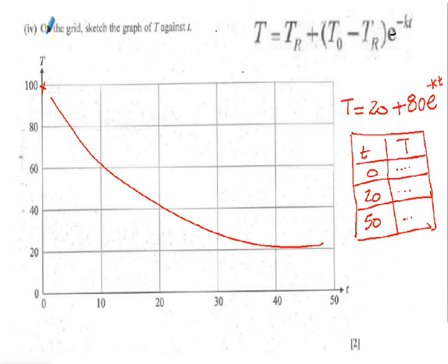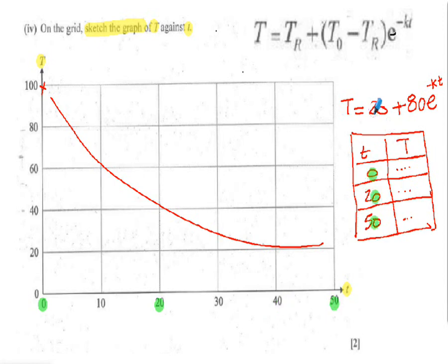Part four asks you to sketch the graph of capital T (temperature) against lowercase t (time). I suggest calculating three points: when t = 0, t = 20, and t = 50. Using the already-calculated value of k, substitute values of t into the equation to find the corresponding temperatures. Plot those three points and draw a line through them to give the basic curvature — that's all the question wants.